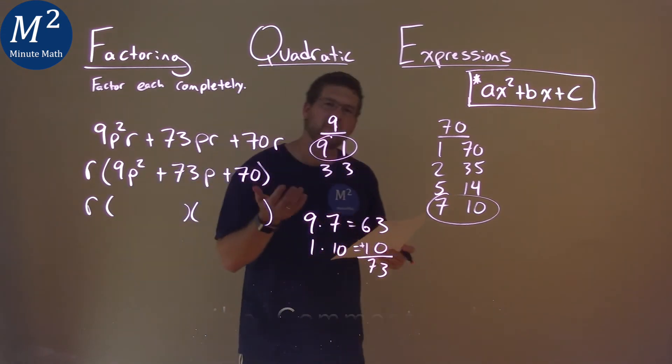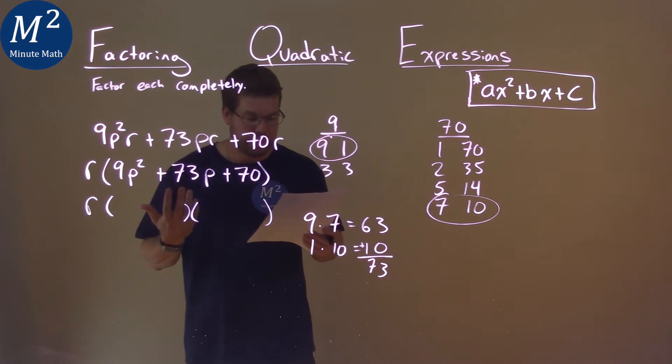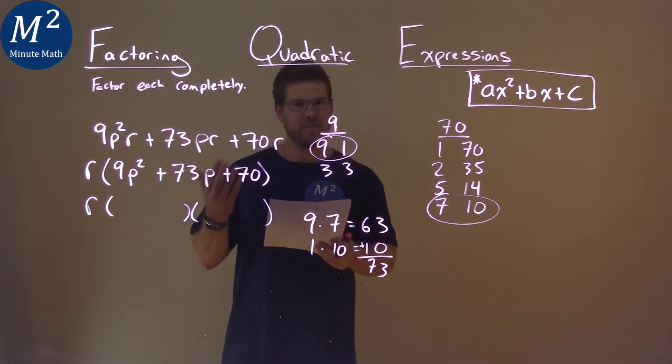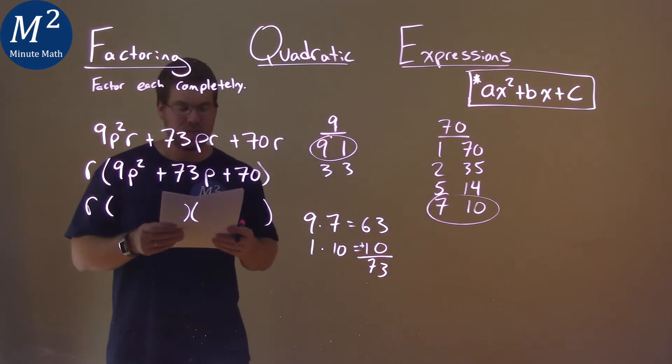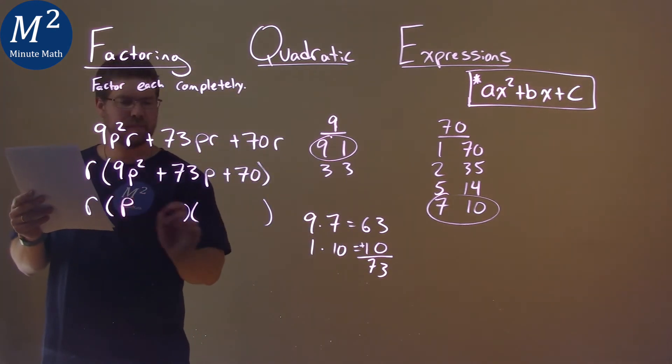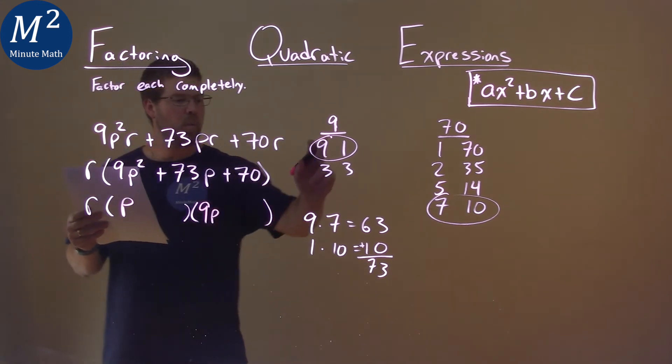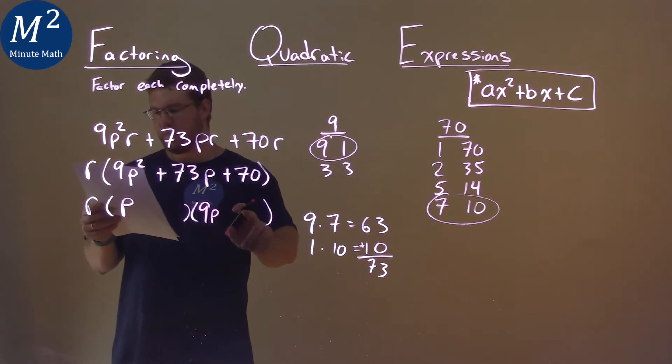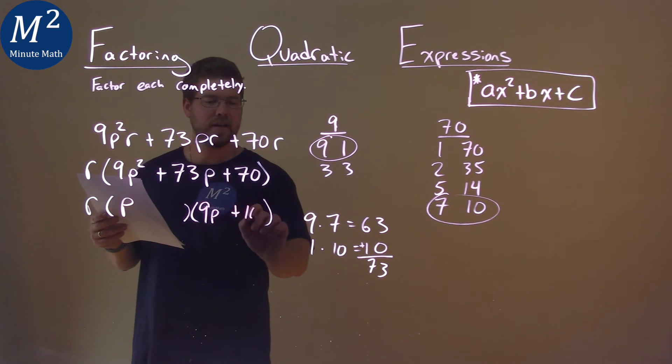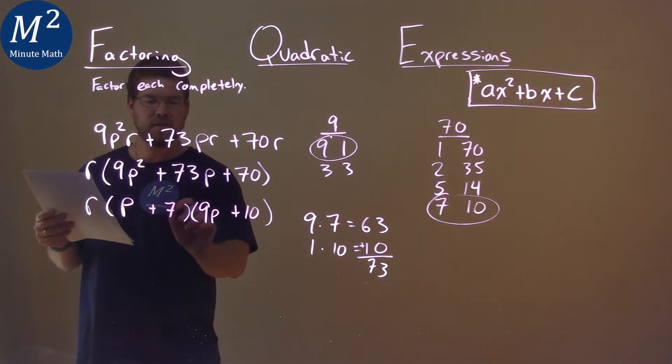By being smart with my guessing, I got the two pairs that work. Let's write this correctly: put 1p first, then 9p in the second part. Since 1 was multiplied by 10, we put 10 here. And since 9 was multiplied by 7, we put 7 in the first parenthesis.